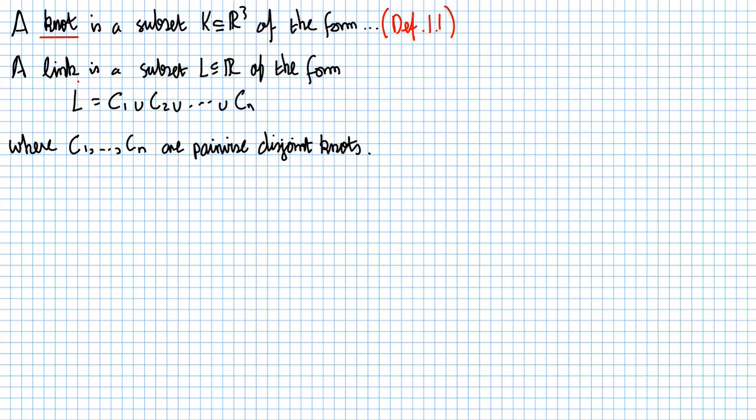Now, assuming we know what a knot is, what's a link? A link is a subset L inside R³ of the form L is the union of C₁ and C₂ up to and including Cₙ, where C₁ up to Cₙ are pairwise disjoint knots.